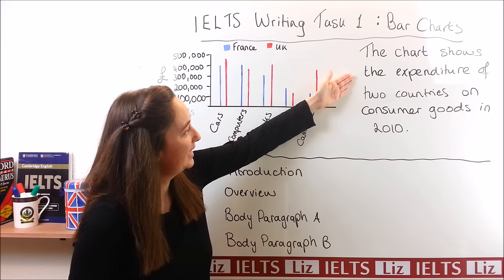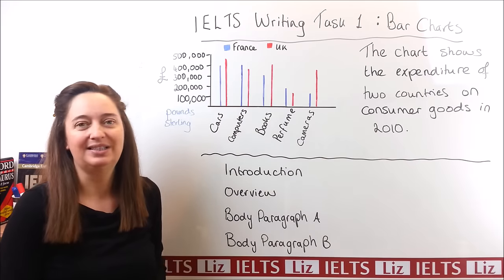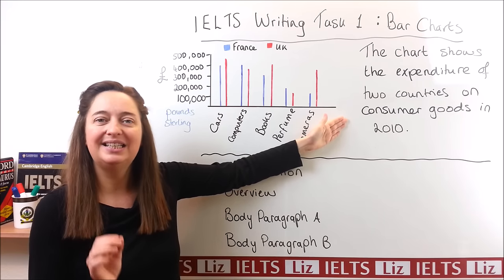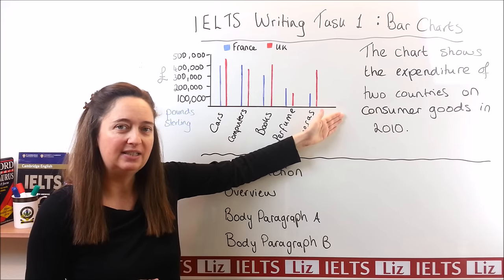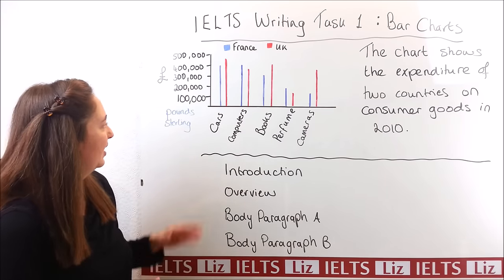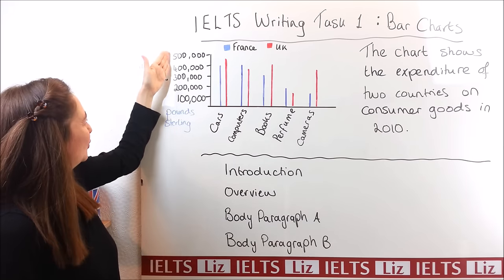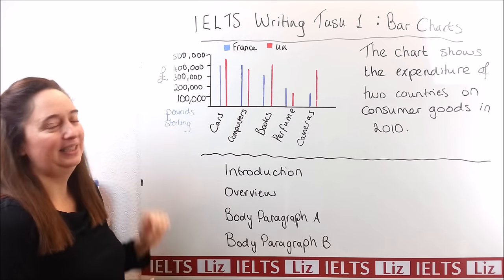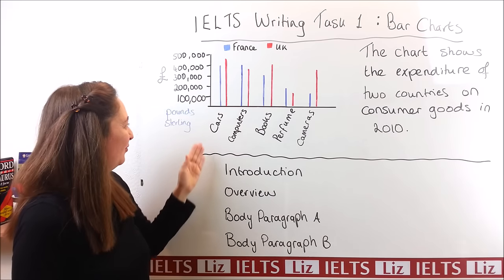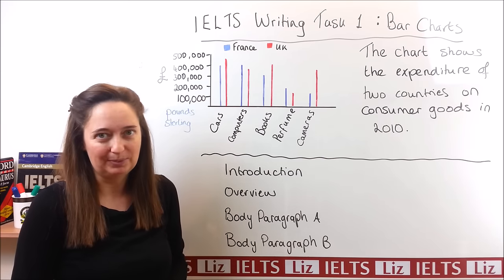The chart shows the expenditure of two countries on consumer goods in 2010. IELTS will always give you a description of the chart, and this is key information that you need to read to understand the meaning of your bar chart. When we look at the bar chart, we can see that down the vertical axis — so at the side — we've got all the different amounts of money that the two countries spend. Along the bottom, so that's the horizontal axis, we've got all the different types of consumer goods, so we've got five different types of consumer goods.